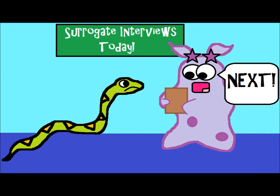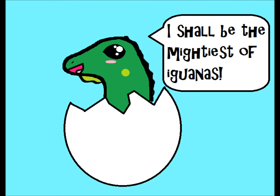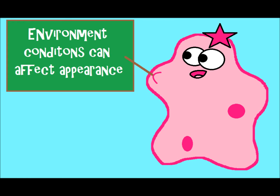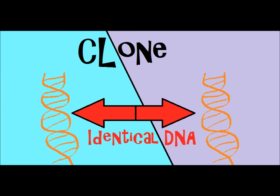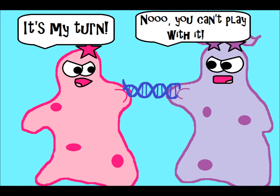It would need to be implanted somewhere so that it can develop. It would hatch into a baby iguana, though over time environmental conditions might make it look slightly different than the original, because the environment can affect how an organism looks and how genes function. But the iguana would be a clone — an identical copy — because the genetic material, the DNA, would be the same. There are a lot of ethical debates with cloning or really any biology topic that involves DNA.